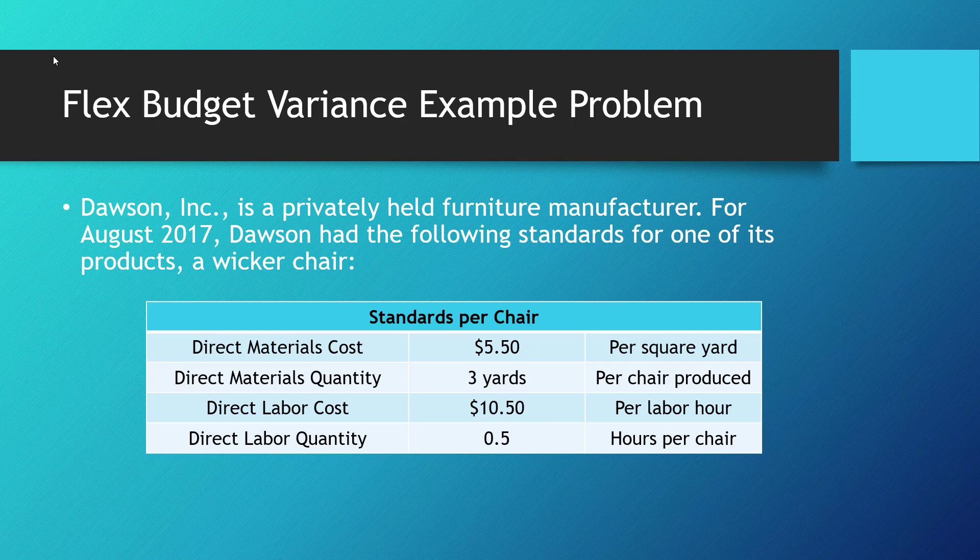We budgeted that our direct materials cost was going to average $5.50 per square yard of wicker used to make these chairs, and that each chair was going to take 3 yards. We estimated that the cost for direct laborers who manufacture these chairs was going to average $10.50 for every hour worked, and each chair was going to require half an hour. These are our standards — what should happen during the period.